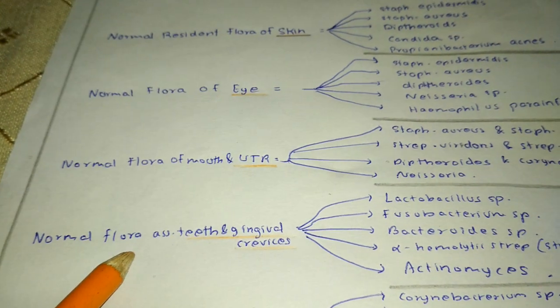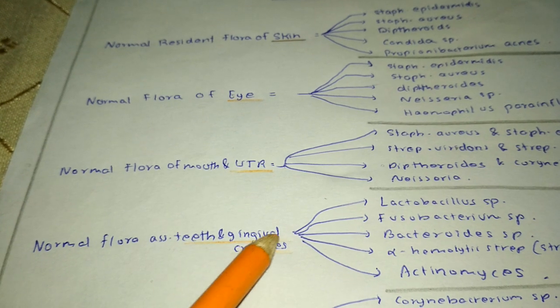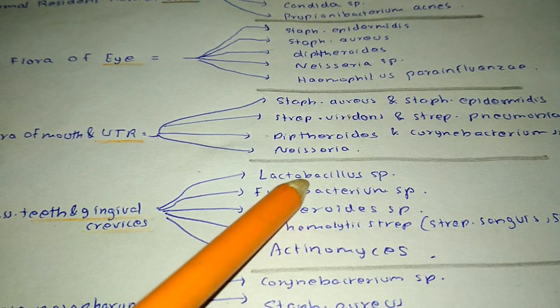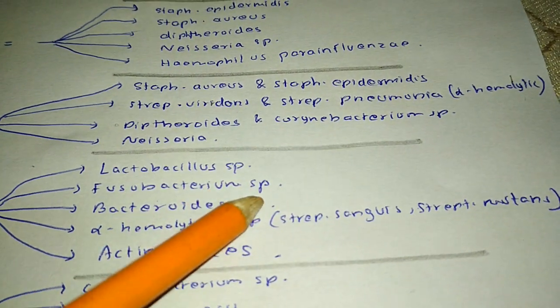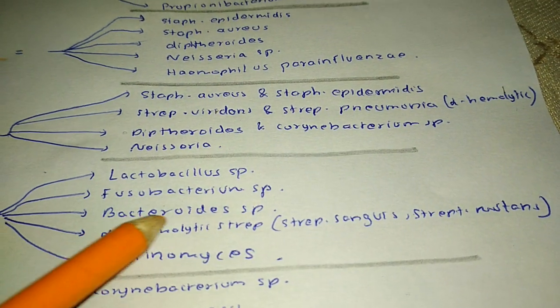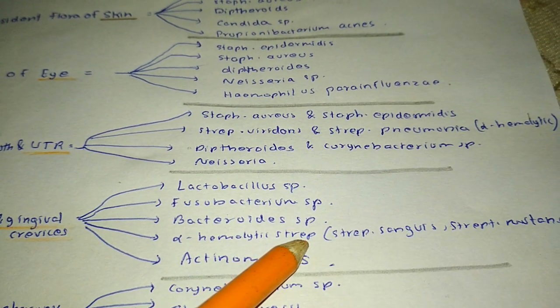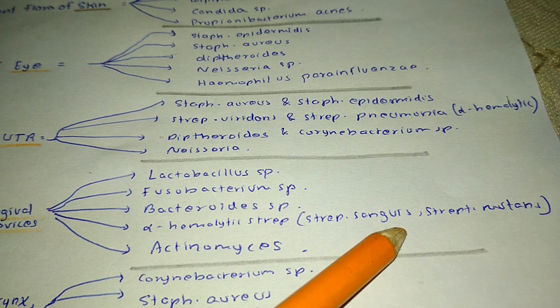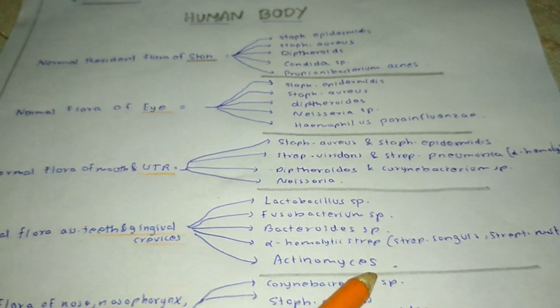The normal flora present in the teeth and gingival crevices includes Lactobacillus species, Fusobacterium species, Bacteroides, alpha hemolytic Streptococcus species such as Streptococcus sanguis and Streptococcus mutans, and Actinomyces.